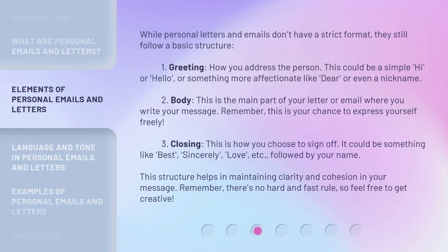While personal letters and emails don't have a strict format, they still follow a basic structure. The body is the main part of your letter or email where you write your message — this is your chance to express yourself freely. The closing is how you choose to sign off; it could be something like 'best,' 'sincerely,' 'love,' etc., followed by your name. This structure helps in maintaining clarity and cohesion in your message. Remember, there's no hard and fast rule, so feel free to get creative.